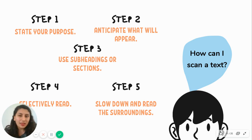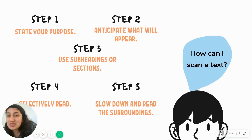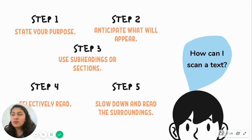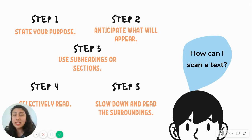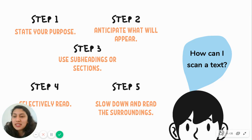Step number three: you can use the subheadings or sections to know where to go find the information. At this step you can realize something: usually when we do scanning, it's because we already did a skimming of the text. So first we do skimming — we know how the text is organized and where the information is. We have a general idea, a big picture. And then we can do scanning, because now we know how the text works and where to find the specific information we need.